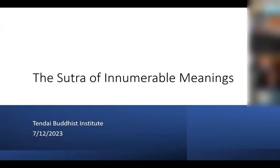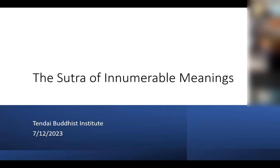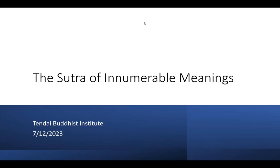Good evening, everyone. Right now, Koshin is getting the camera tuned in for the presentation, and hopefully it is July 12th. The topic for tonight is the Sutra of Enumerable Meanings. There are a couple of reasons I picked this Sutra. It's relatively short, so we can talk more readily about the content, even though we'll only be looking at one of the three chapters. It's a Sutra I personally enjoy, and it answers a very interesting question: what is the most effective way to achieve Supreme Perfect Awakening? So if you want to be on the fast track, tonight is your night.